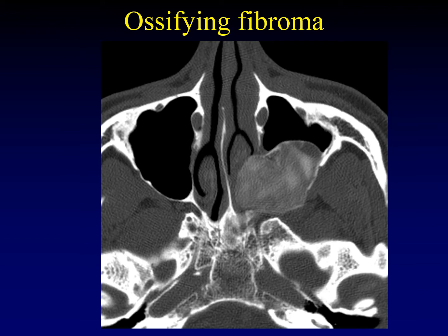At first glance, this looks a lot like fibrous dysplasia. There is ground glass opacity and it's well-defined, very benign looking. But remember what we said about the configuration of fibrous dysplasia — it has the configuration of the underlying bone. This is lobular, spherical, and that is characteristic of an ossifying fibroma. This is how we distinguish between fibrous dysplasia and ossifying fibromas.